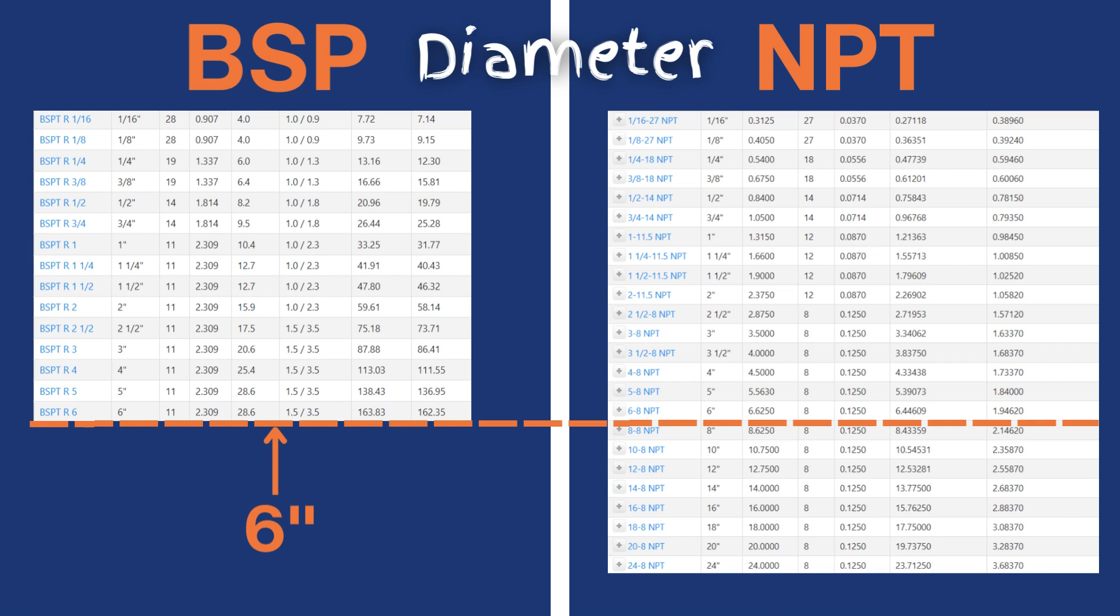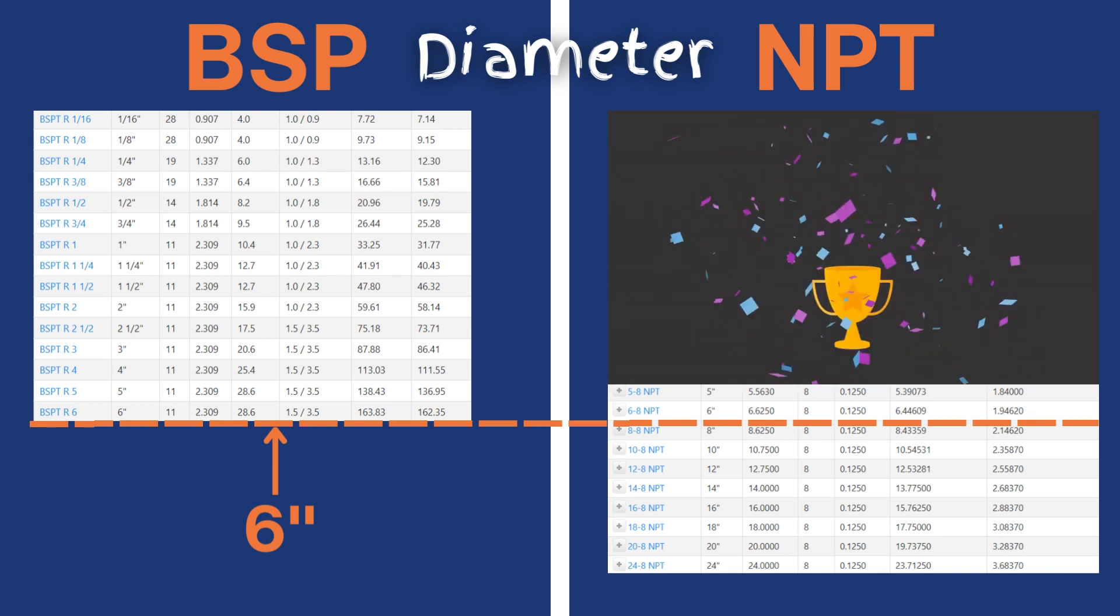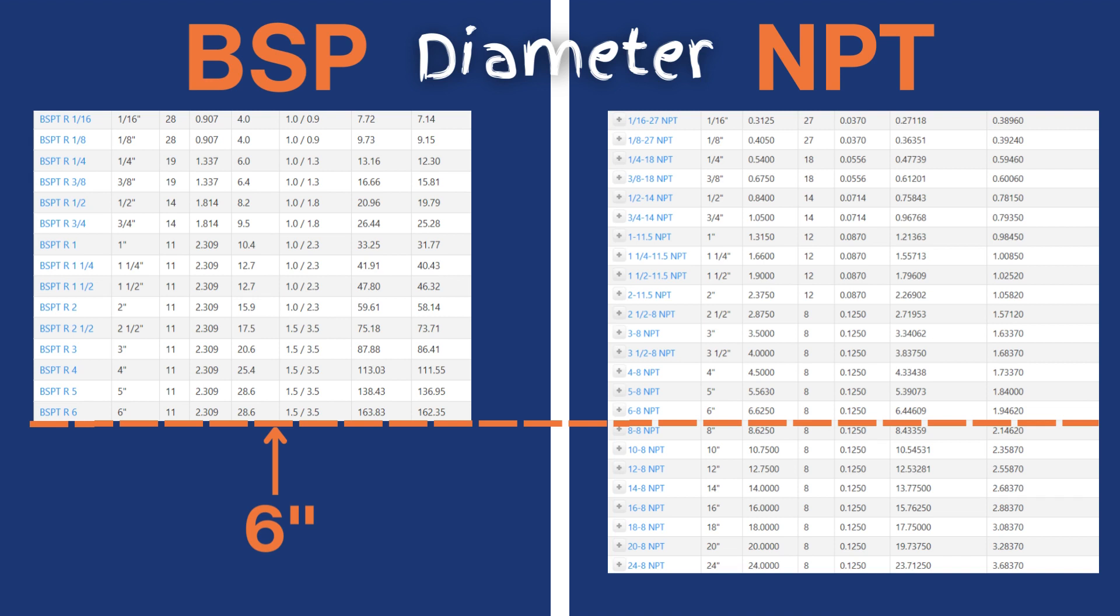So, in this respect, NPT is a clear winner. BSP does not provide a solution if you need a tapered pipe thread larger than 6 inches.